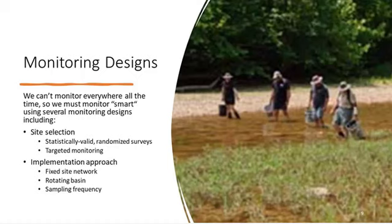Moving from that broad scale to the site-specific: where are those impaired waters, what's causing that impairment, and what do we need to do to restore those waters so that they're meeting water quality goals? Over the past 20 years in the United States, we've seen more and more use of a combination of statistically valid randomized survey designs which complement the targeted monitoring at the site-specific level, so that we're able to understand both the broad-scale context and the site-specific information from targeted monitoring activities needed to develop local action plans to improve water quality.